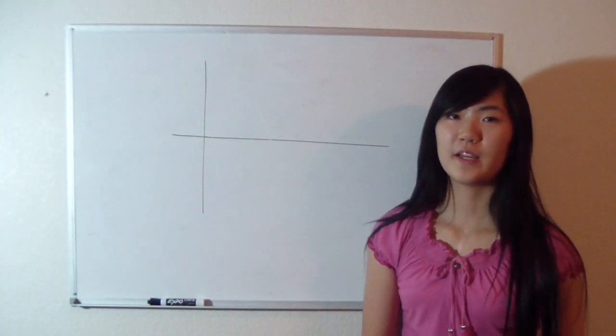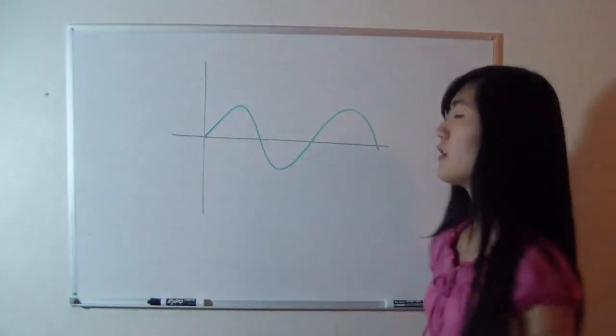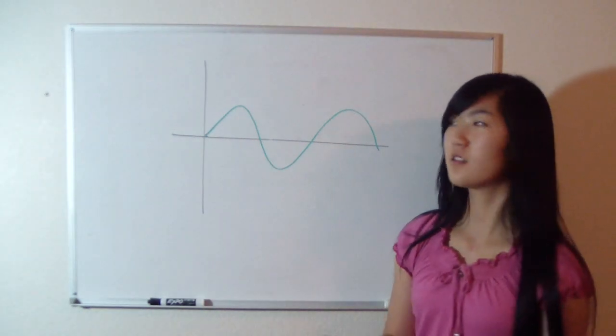Suppose the sound wave of a bass looked like this. The sound wave of the rest of the orchestra would have a higher frequency and a smaller wavelength, like this.